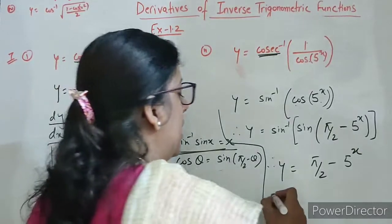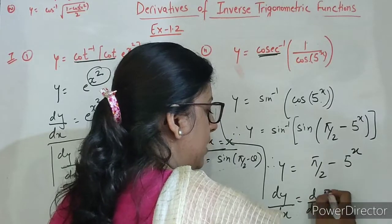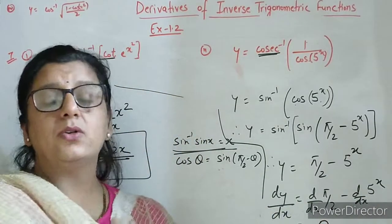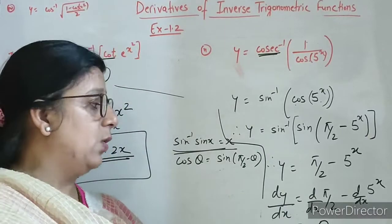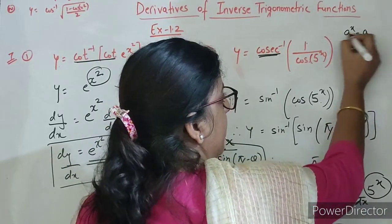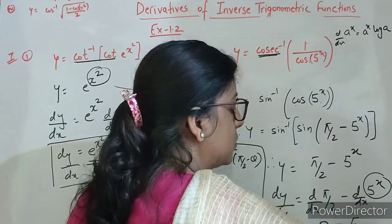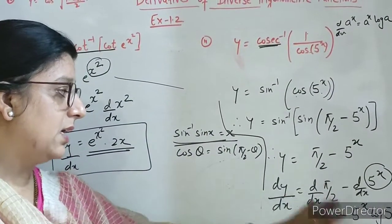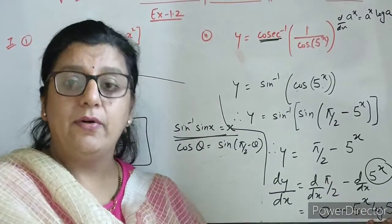Yeh simplified form mein ho chuka hai. Now differentiating on both the sides: d by dx of pi by 2 minus d by dx of 5 to the power x. Pi by 2 is constant so its derivative will be 0, and derivative of 5 to the power x — a to the power x ka derivative is a to the power x log a. So yeh ho jayega 5 to the power x log 5. Final answer: dy by dx is minus 5 to the power x log 5.